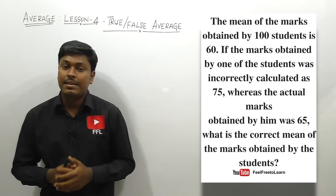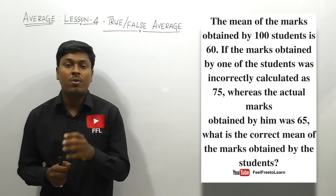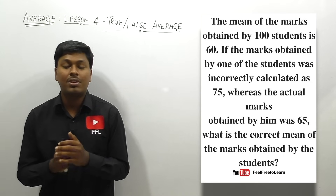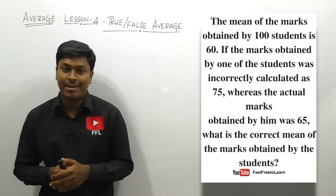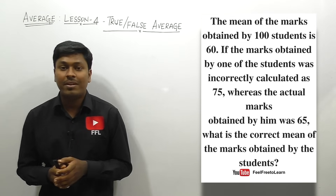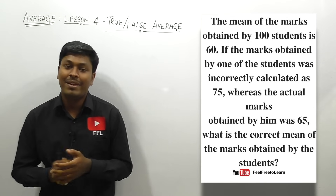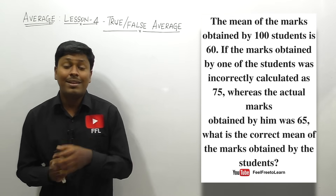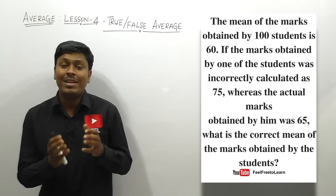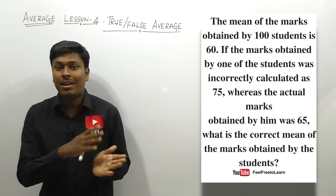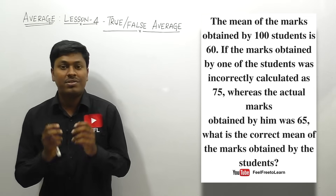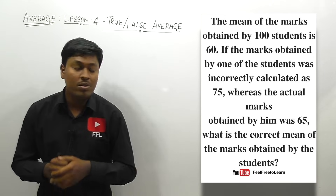In lesson number four we are going to solve five different questions on the topic called average. All five questions will be interesting — they give a wrong average and we need to rectify it and find the correct average.